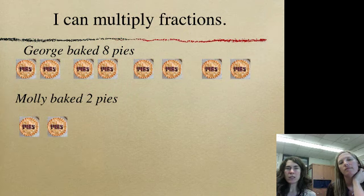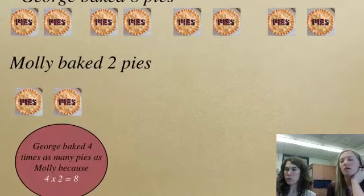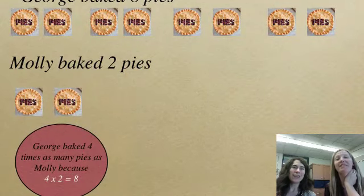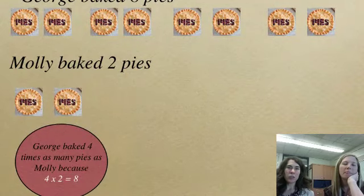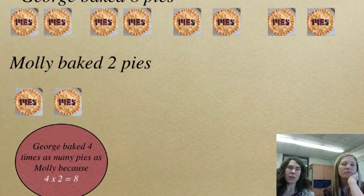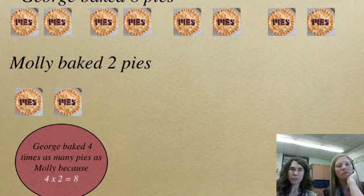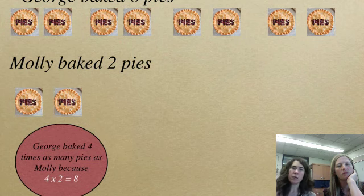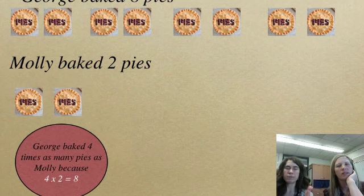So one way, and this is probably the most common way that you can think about it, is that George baked four times as many pies as Molly. Because as you can see here, Molly only baked two. Two times four equals eight, and they're even broken up into four different groups there. So that's one way to think about it.